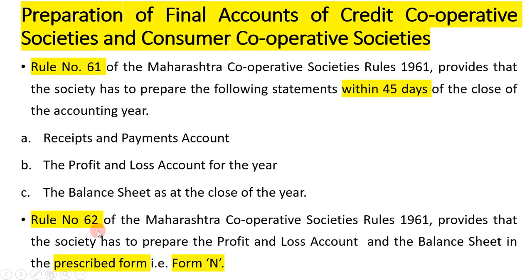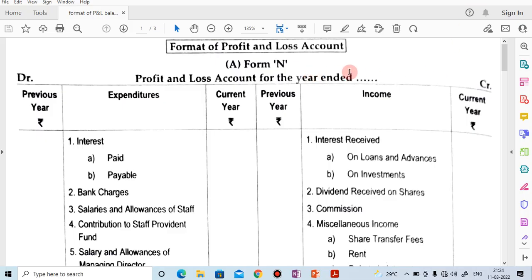Rule number 62 of Maharashtra Cooperative Society Rule 1961 provides that the society has to prepare the profit and loss account and balance sheet in the prescribed form. When credit cooperative societies and consumer cooperative societies are preparing the financial statements, the profit and loss account and balance sheet are to be prepared in a prescribed form called Form N.